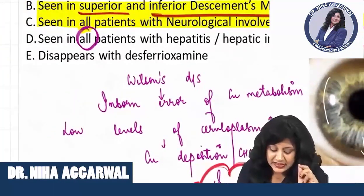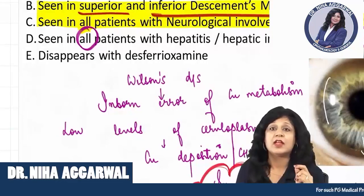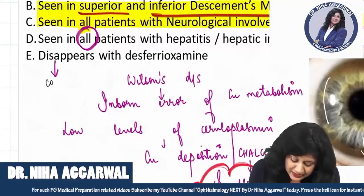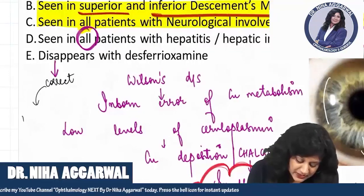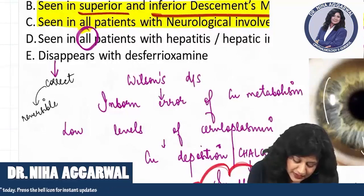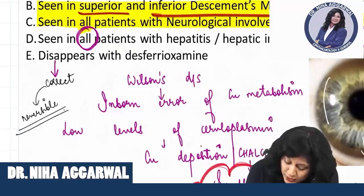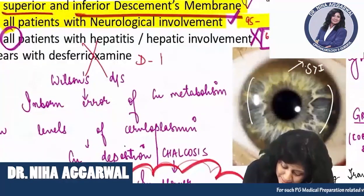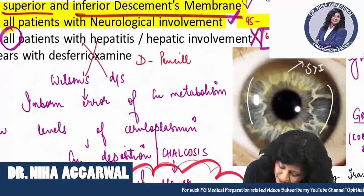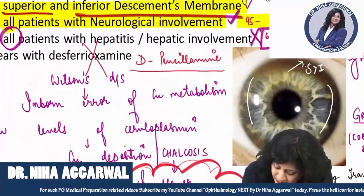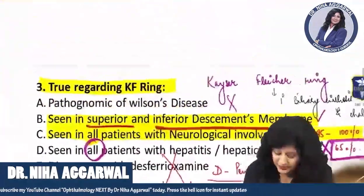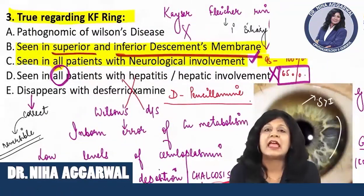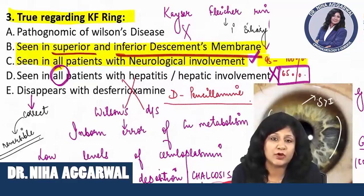Option E says it disappears with desferrioxamine. This statement is partially wrong. It disappears — that part is correct, meaning the KF ring is reversible. But it is not reversible with desferrioxamine; it reverses with D-penicillamine. Therefore this statement is again wrong. So the right choices in this question are B and C: it is seen in the superior and inferior Descemet's membrane, and it is seen in all patients with neurological involvement.